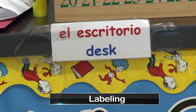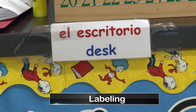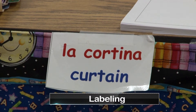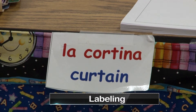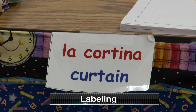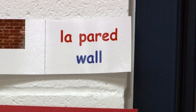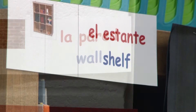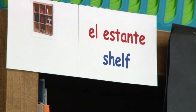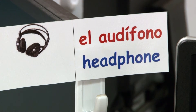Another important part in creating a dual language environment is classroom labeling. In the Gomez and Gomez Model, classrooms are labeled in both English and Spanish. English labels are identified by the color blue, and Spanish labels are identified by the color red. If you have store-bought labels that are printed in full color, red and blue dots can be used to distinguish between the two languages.